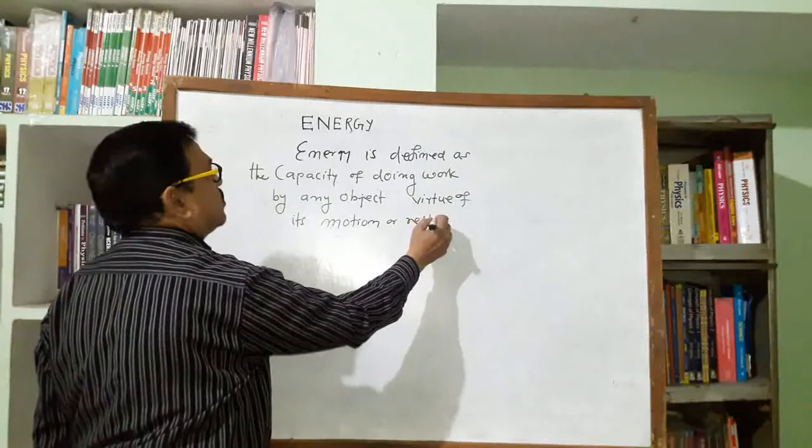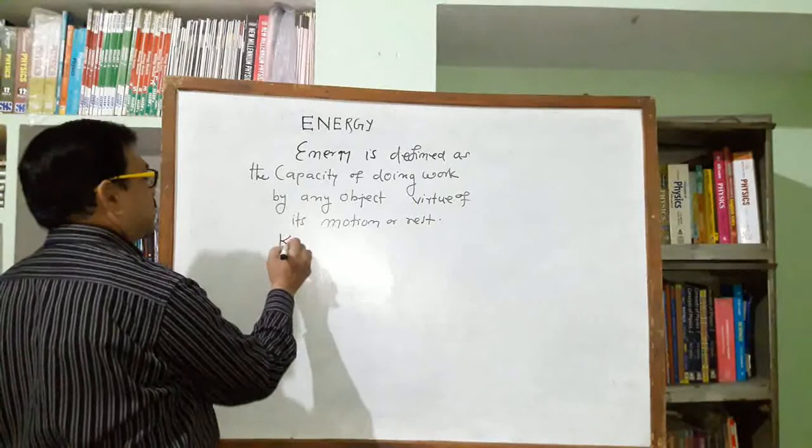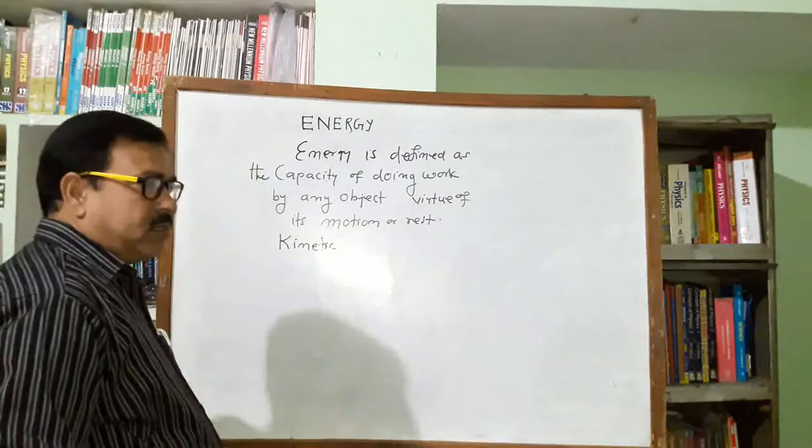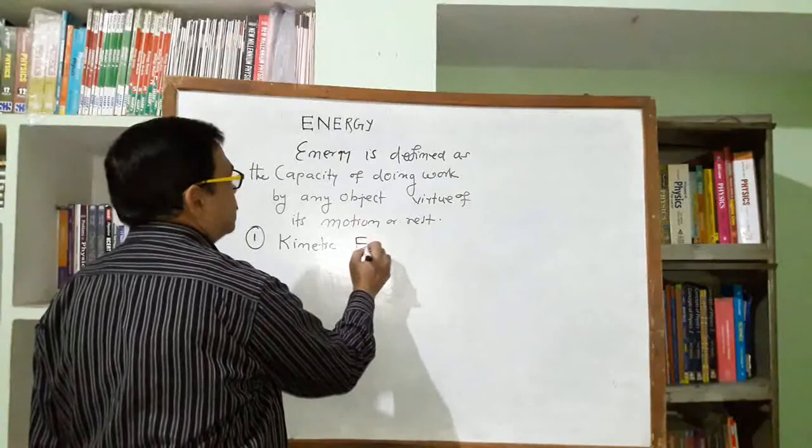If the object is in motion, we use to write kinetic energy. When the object is at rest, we use to write potential energy. So let us first see the concept of kinetic energy.